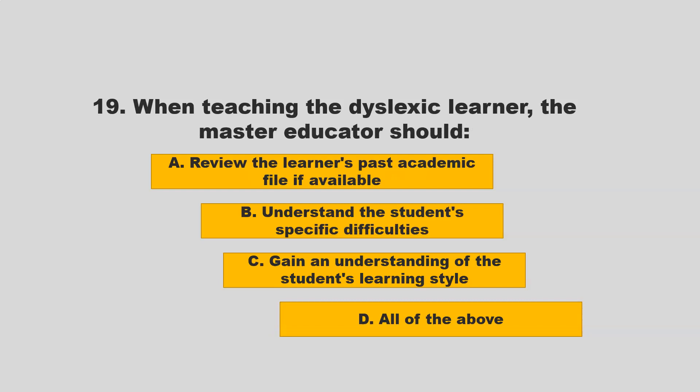When teaching the dyslexic learner, the master educator should: A) review the learner's past academic file if available; B) understand the student's specific difficulties; C) gain an understanding of the student's learning style; D) all of the above. If you chose D — all of the above — you are correct.